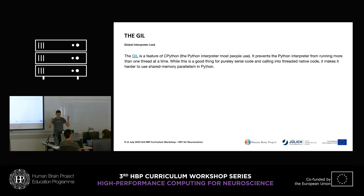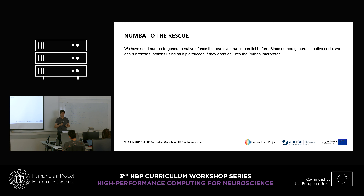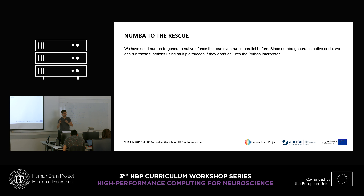This is a problem if we actually want to do parallel computing with Python — but fear not, Numba to the rescue. I told you that Numba is a compiler: it takes Python and generates native code. If it generates native code and runs in no-Python mode, it can leave the GIL and do its own threading.